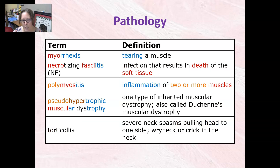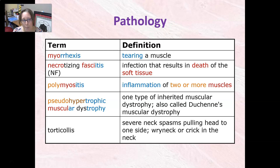Necrotizing fasciitis is an infection that results in the death of soft tissue. It's kind of scary looking and is often caused by streptococcus. Polymyositis is an inflammation of two or more muscles. This can also be an autoimmune disease.